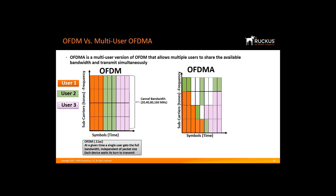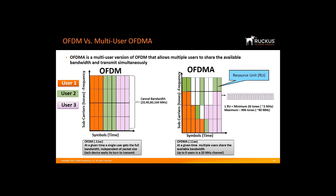In contrast, OFDMA is AP-centric. It enables an 11AX AP to simultaneously communicate with multiple devices by dividing each Wi-Fi channel into smaller sub-channels known as resource units, or RUs, sometimes called RU tones. The minimum size of one RU is 26 tones or sub-carriers, which equals approximately 2 MHz. A 20 MHz channel can serve up to 9 users. The access point determines how to allocate the sub-channels, as each individual RU can be utilized for different clients that are serviced simultaneously.